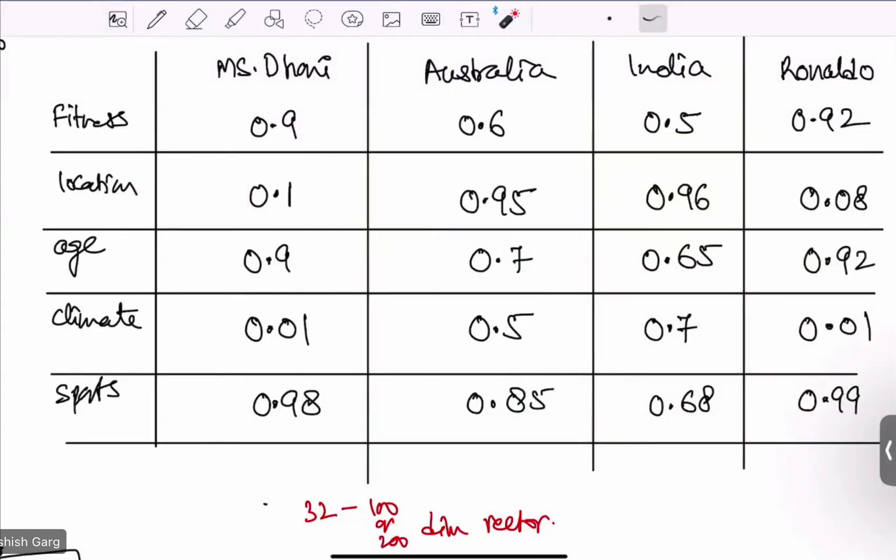And how does it happen? Using word embedding. So we will see word embedding later on. How does word embedding work, but it is done by using word embedding.